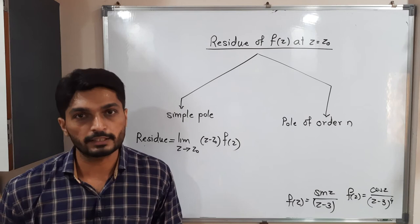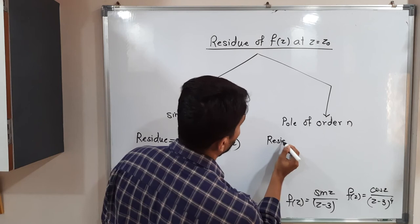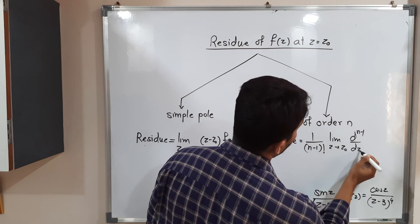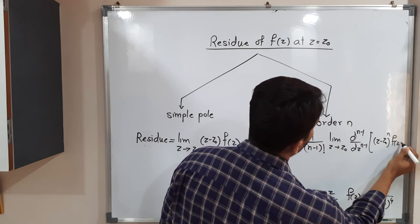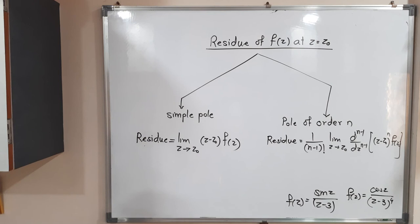When you have a pole of order n, where n means 2, 3, 4—anything other than 1—the formula will be a little more complicated. The formula is: 1/(n-1)! × limit as z tends to z₀ of d^(n-1)/dz^(n-1) [(z - z₀)ⁿ f(z)]. Using this formula, we get the residue for a pole of order n. And for a simple pole, that means pole of order 1, using the first formula we get the residue. You can make a screenshot of it. Thank you, bye bye.